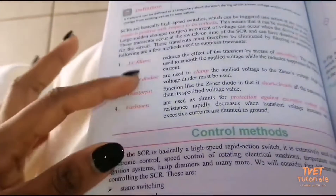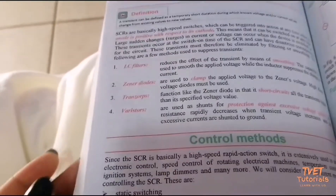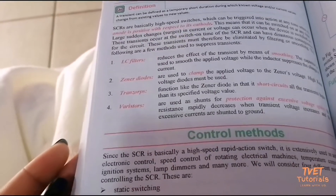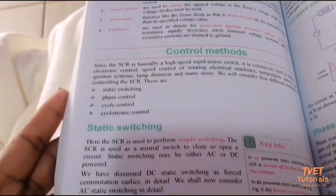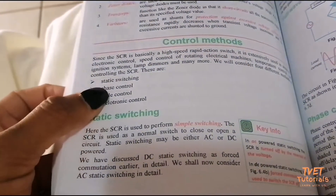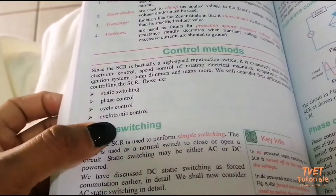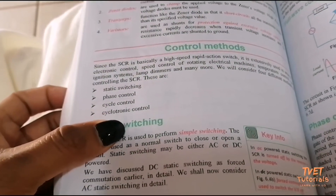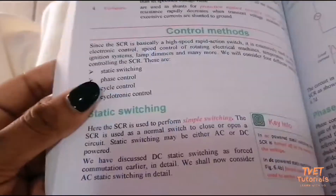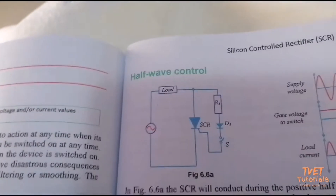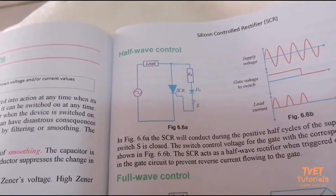You must know the methods used to eliminate transients. For control methods of SCR, we have static switching, phase control, cycle control, and cyclotronic control. For static switching, it operates the same as a half-wave rectifier.